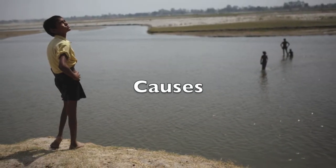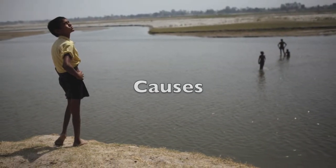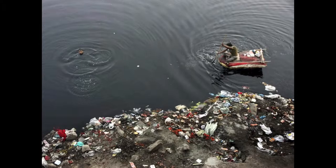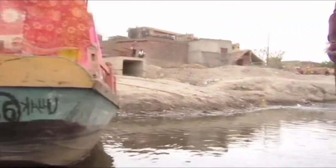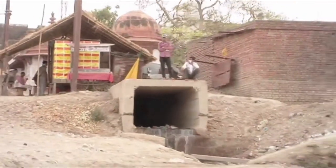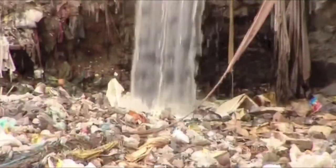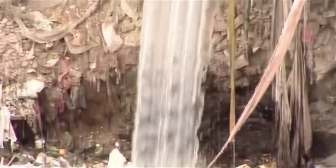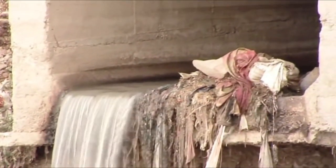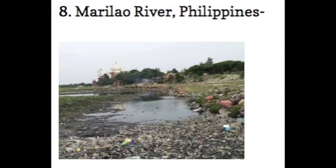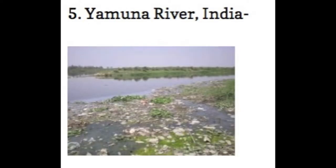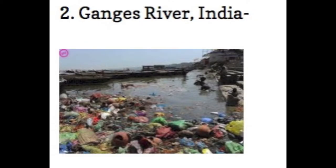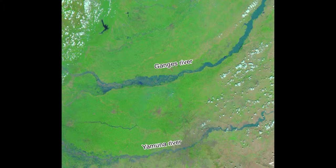Water pollution has to come from somewhere. In India, the two main causes are from garbage disposal and sewage. Sewage waste produces high amounts of pathogens — pathogens are disease-causing microorganisms. The lack of work from sewage treatment plants causes a lot of it to be dumped. In these images, the 10 dirtiest rivers are shown according to listdose.com, and two of those rivers were from India.